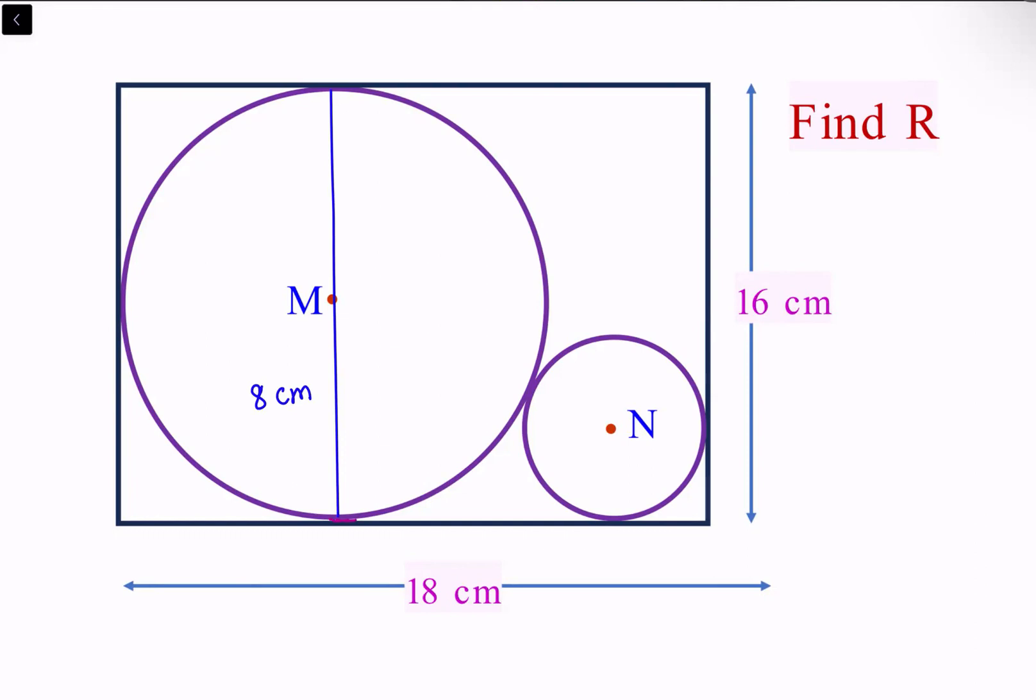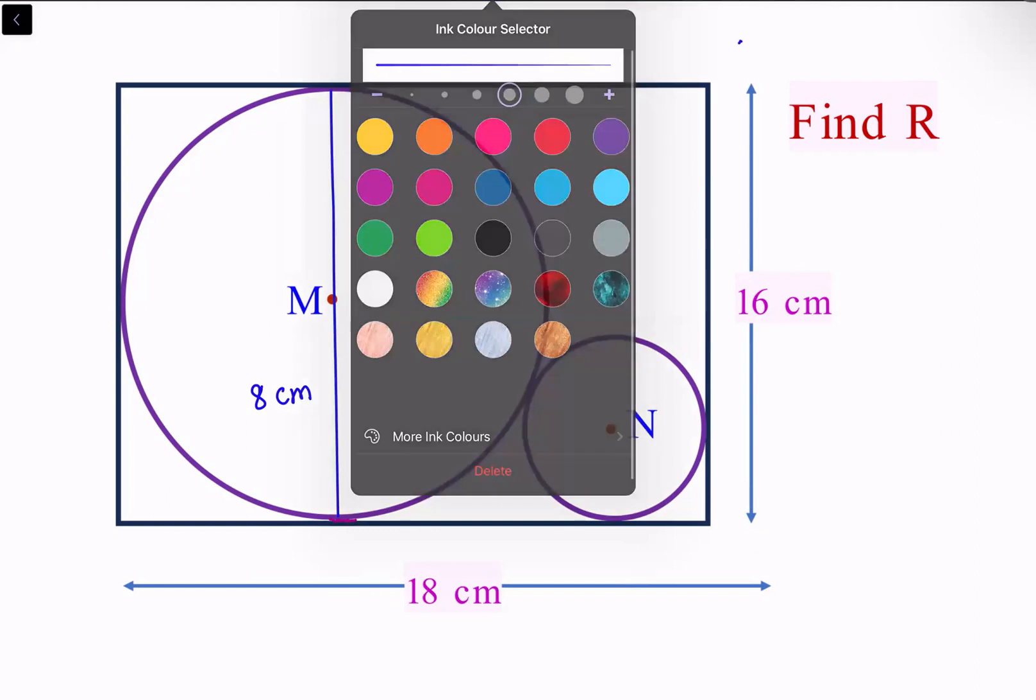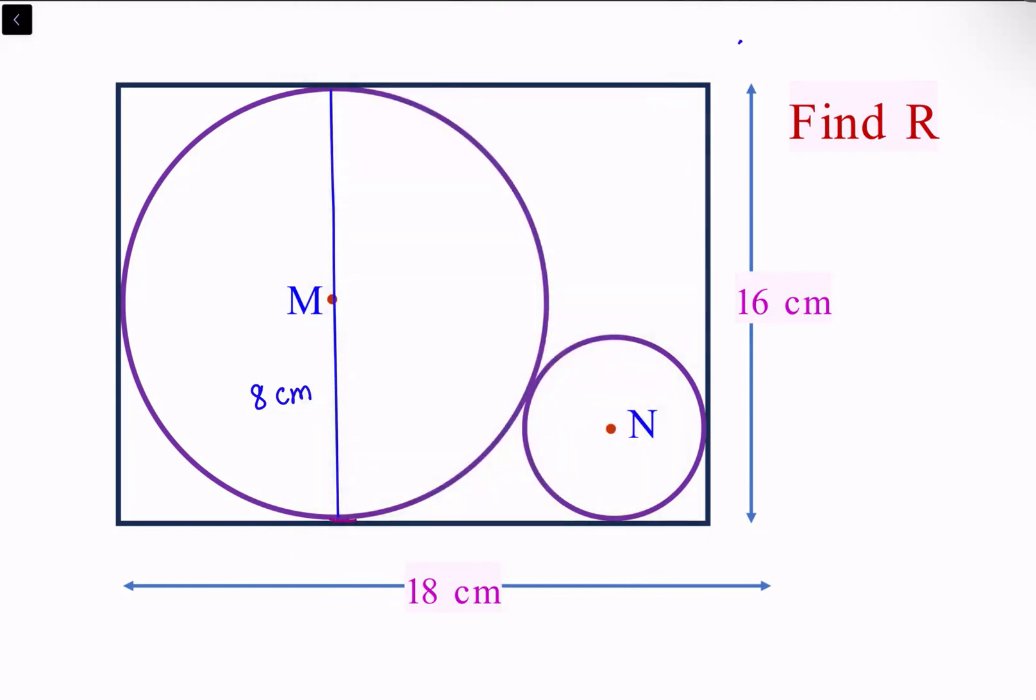We'll start with using the theorem that if two circles are touching each other, then their centers and the point of contact are all in a straight line. So I'm joining the centers M and N, and it's passing through the point of contact.